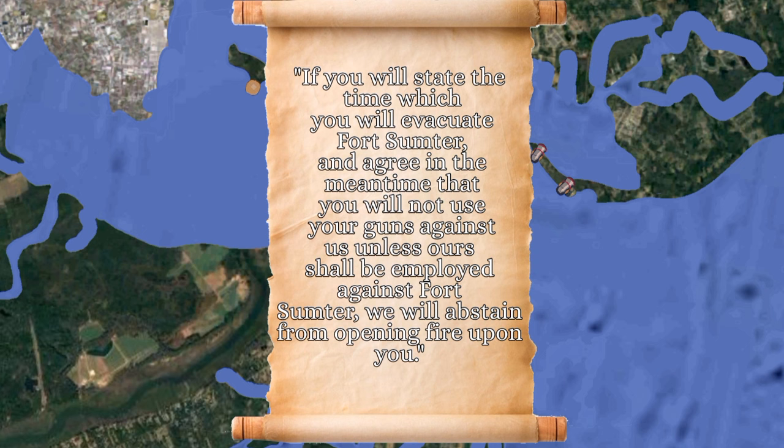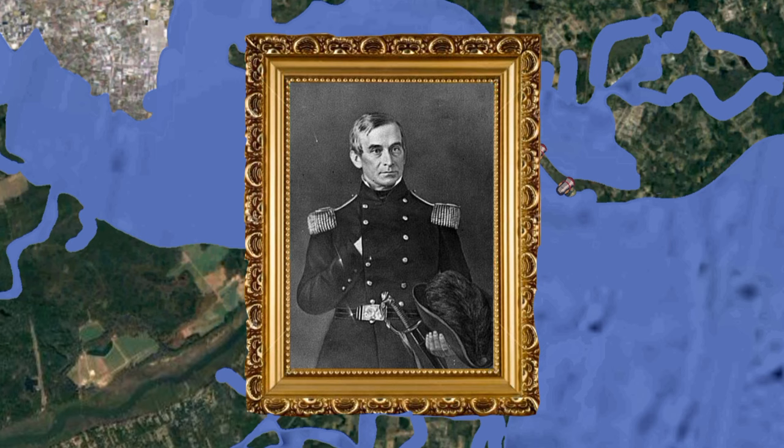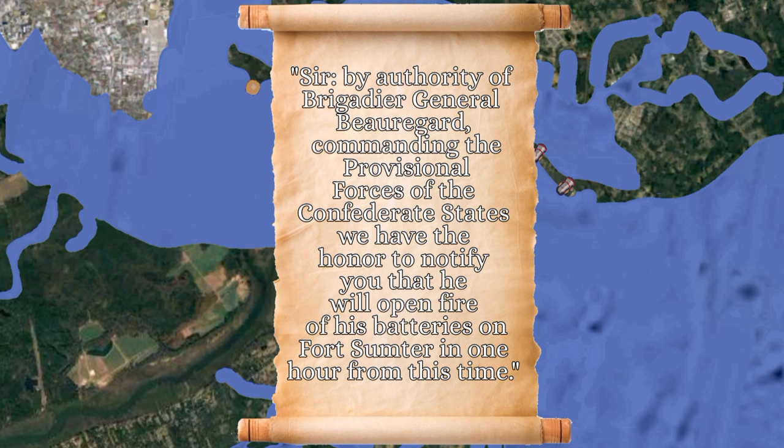The aides returned to Charleston and reported Anderson's comment to Beauregard. At 1 a.m. on April 12, the aides brought Anderson a message: 'If you will state the time at which you will evacuate Fort Sumter and agree in the meantime that you will not use your guns against us unless ours shall be employed against Fort Sumter, we will abstain from opening fire upon you.' After consulting his senior officers, Anderson replied he would evacuate by noon on April 15 unless he received new orders or additional supplies. Chesnut considered this too conditional.